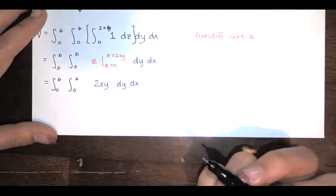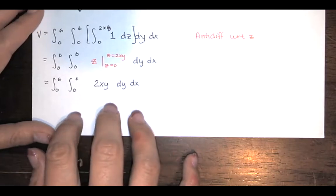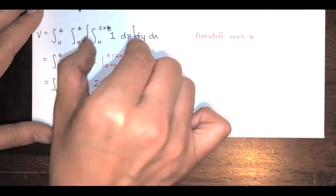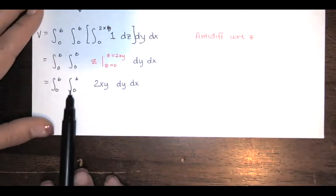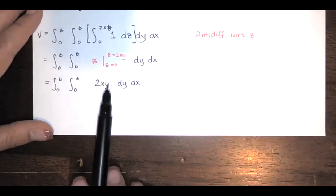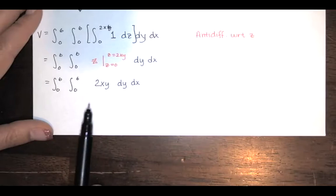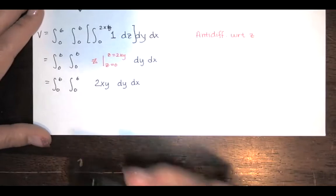So I get 2xy minus 0, which is just 2xy. And that's my new integrand. Notice that that is the double integral we would have set up to find the volume under the surface. It's the same thing. And that's exactly what we get when we evaluate that innermost integral with respect to z. It's the integral over the region R of that function f of xy, where we're trying to find the volume under f of xy or between f of xy and the xy plane above some region when that function is non-negative over that region.